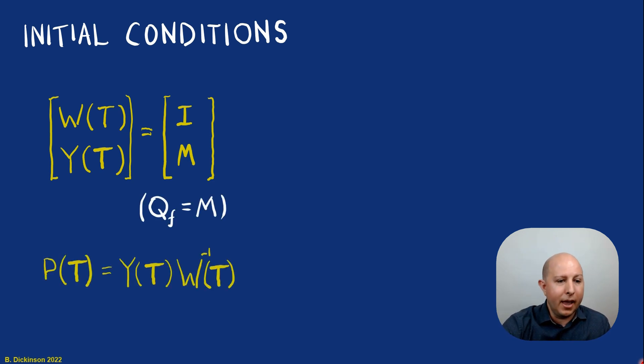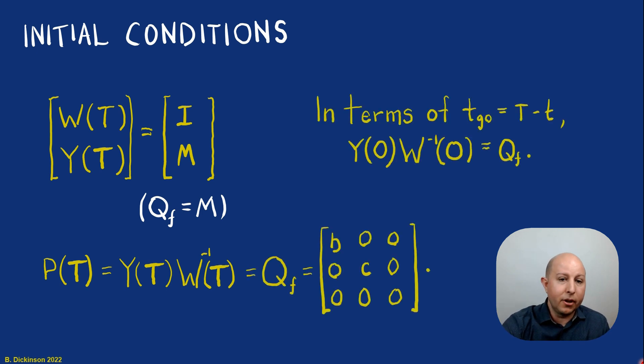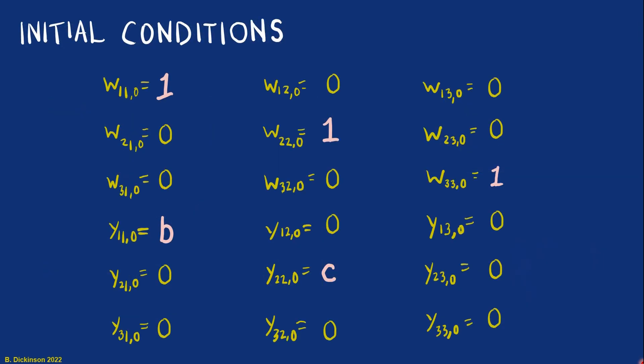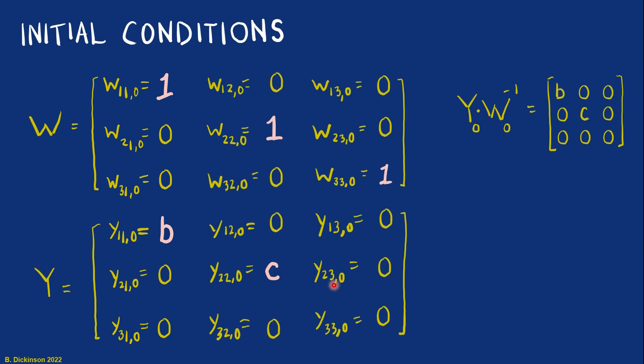So remember, QF is just M, and we have our boundary condition, which is QF. But in terms of time to go, then at capital T, time to go is zero. And so we have P naught now is QF. And that is our initial condition. Breaking that all out into individual terms. Remember we said that W was identity, and Y was the terminal matrix. So you can see in the pink characters here, identity, and then b and c on the diagonal of Y. So here are our initial conditions for the problem we're going to solve.